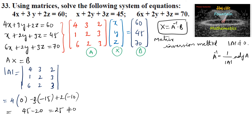Since the determinant is 25 and not equal to 0, A inverse exists. We need to find 1 over det(A) times the adjoint of A. Hence the matrix inversion method is applicable. Now let us use the shortcut method to determine the adjoint.